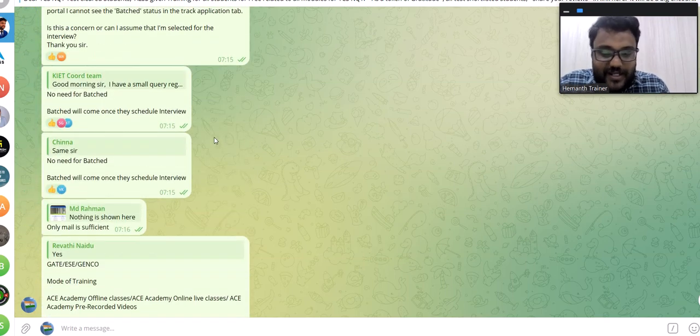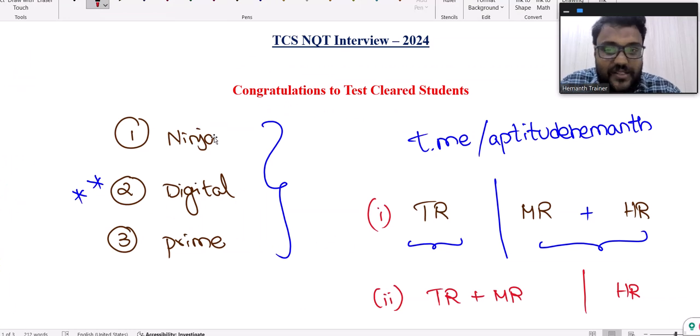Many people are asking what type of questions they'll ask for Digital, Prime, or Ninja. Generally for Ninja, they don't go more on coding - less technical, less coding. But for Digital and Prime it's different.